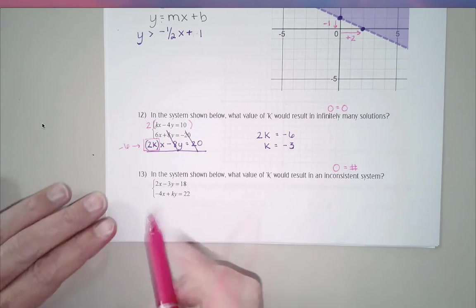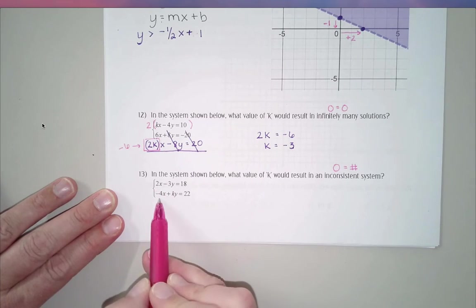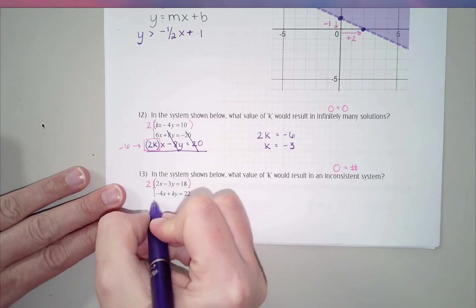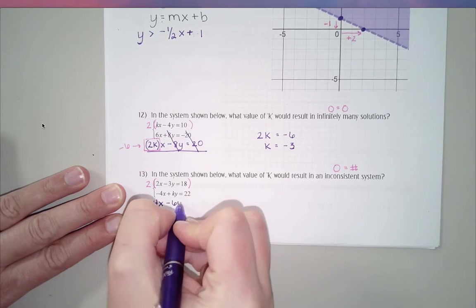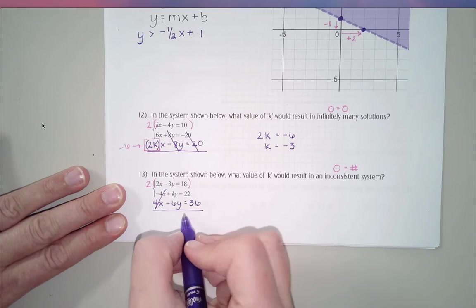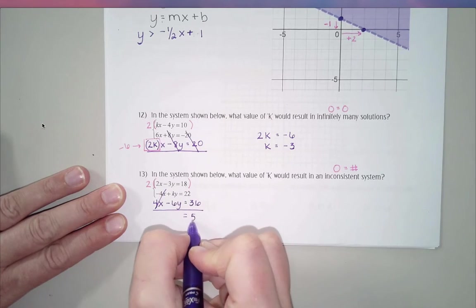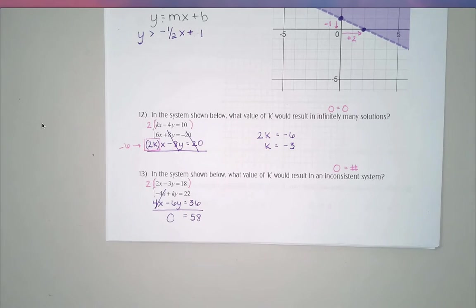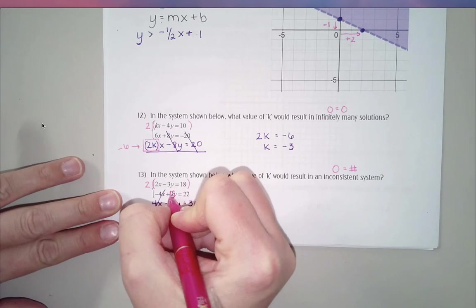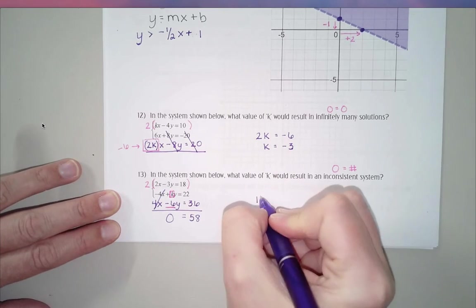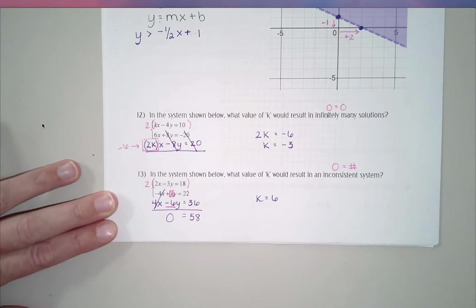When I look at this equation, I look at that top one and I say I would like this to be a positive 4 to cancel with that negative 4. So I'm going to multiply the top equation by 2. And when I do that, I end up with 4x minus 6y equals 36. This cancels. Notice that this does not cancel this time. We end up with 58 or something. But that's okay. Our goal is to get these y's to cancel so that I end up with 0 equals 58. So the question now is what needs to go right here? What number needs to go in that spot of k to cancel with a negative 6? This one's even more obvious than the last one was. We need that k value to be a positive 6.